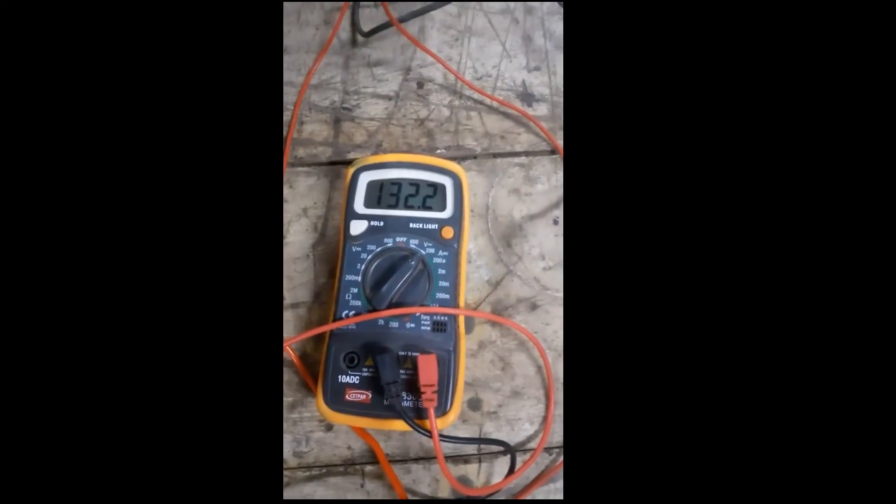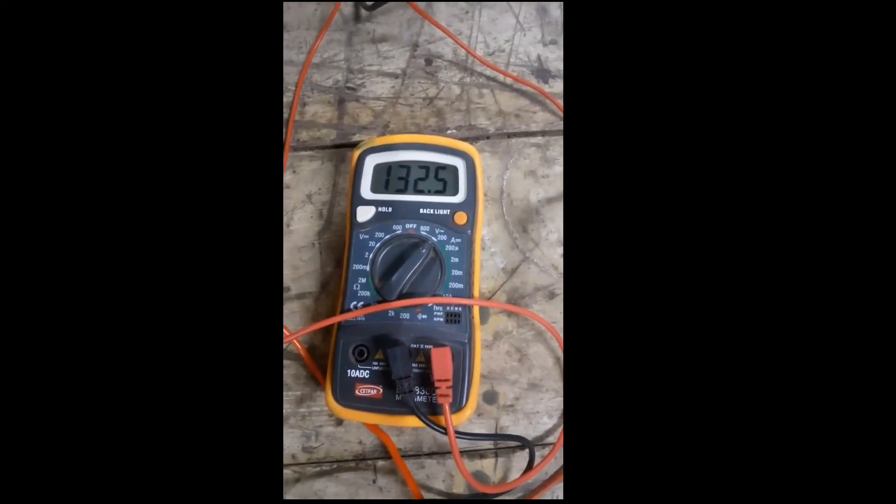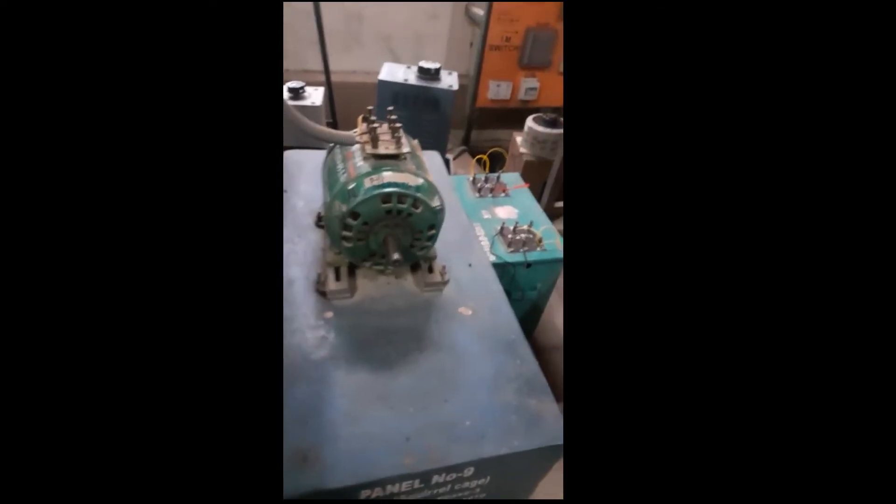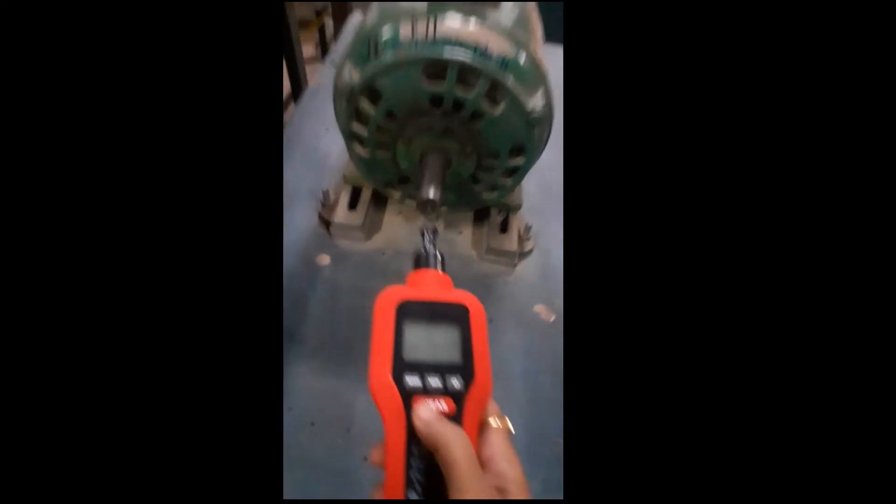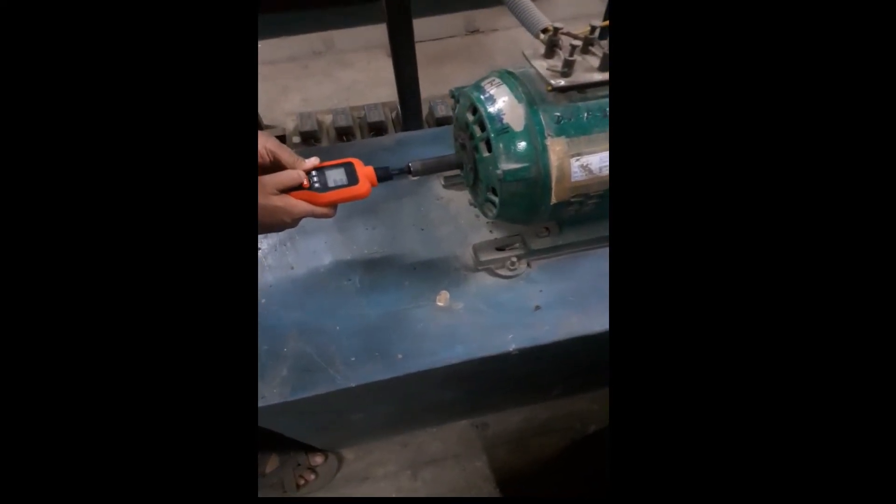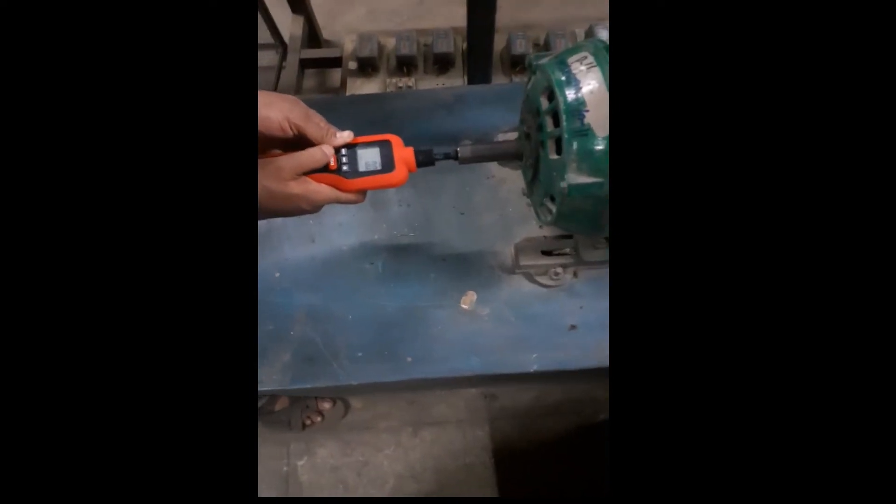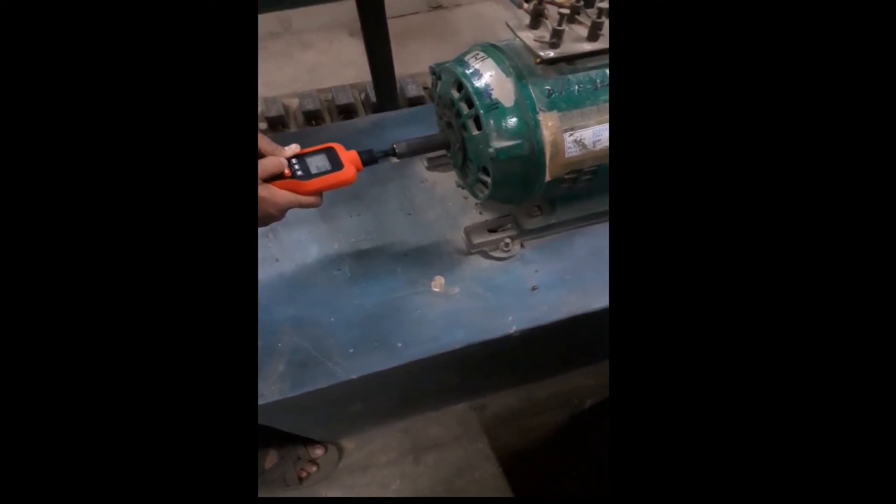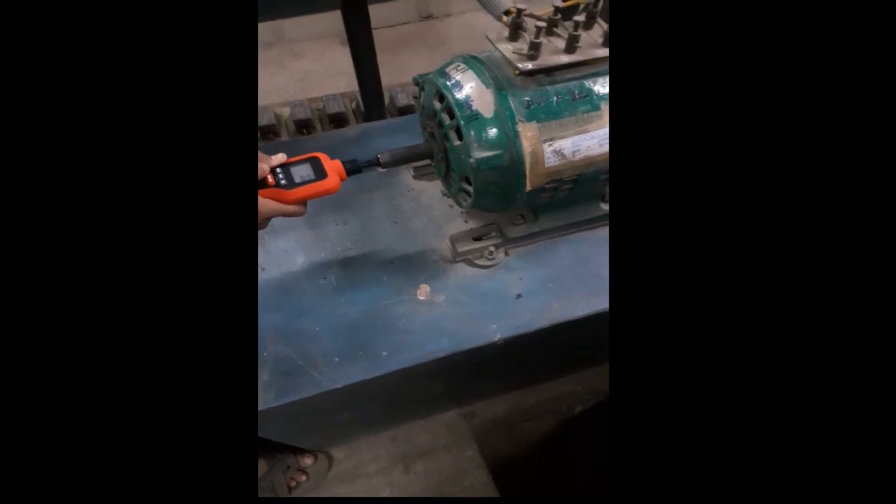Here on this multimeter, we are finding voltage as 132.5 volts. This voltage is applied across this squirrel cage induction motor. With the help of tachometer, I am going to take the reading of speed at which this motor is running. The tachometer is attached with the shaft and it will give you exact reading at which your motor is running.